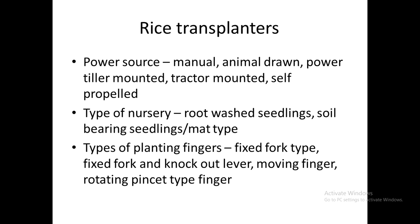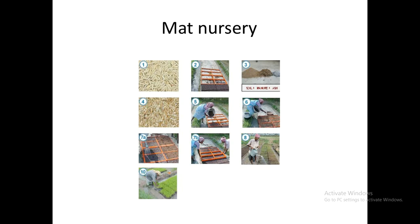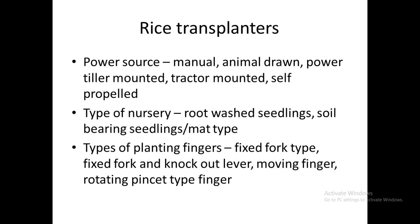In the mat type of nursery, seeds are placed in between frames called mats, watered, and allowed to germinate for about 28 to 30 days. Once the seeds germinate, the frame is removed and each mat is considered a separate unit used as input for the transplanter.